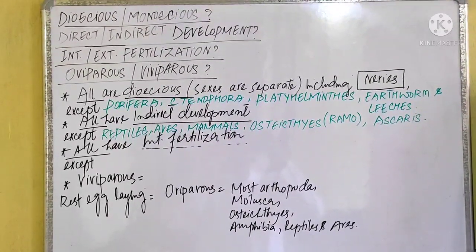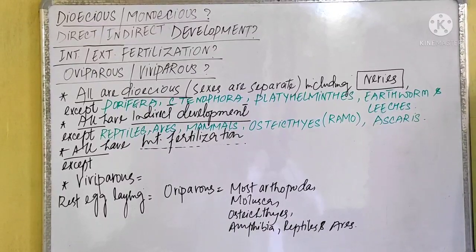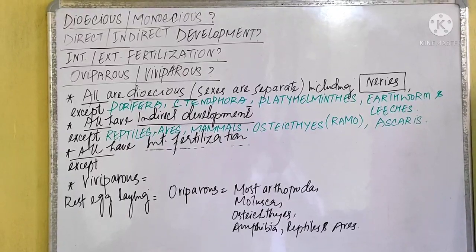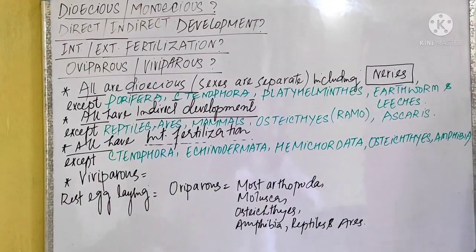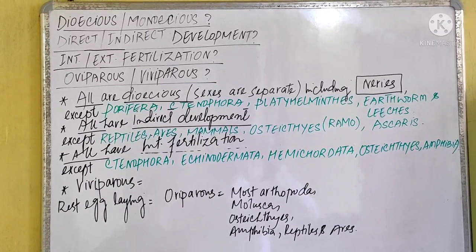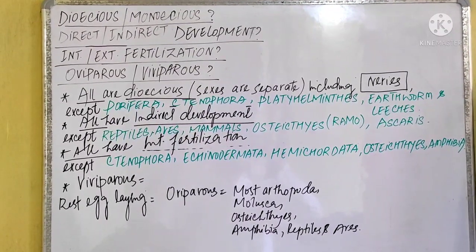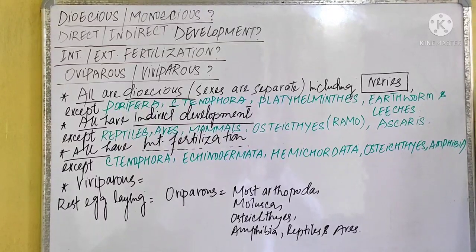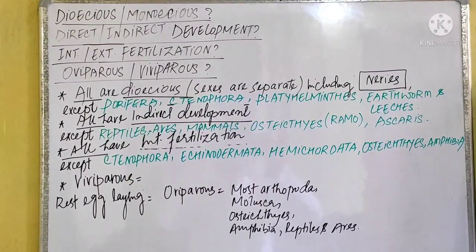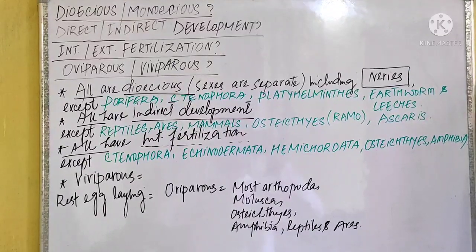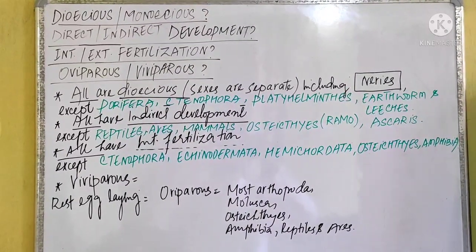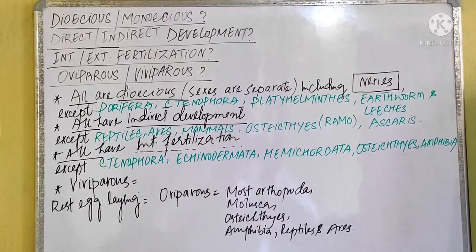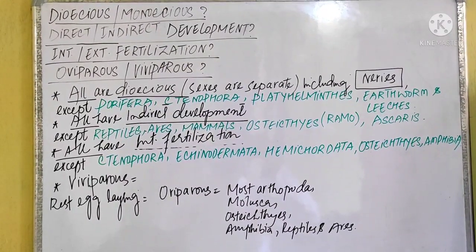Moving on — all organisms have internal fertilization, except the following: Ctenophora, Echinodermata, Hemichordata, Osteichthyes, and Amphibia — all of these have external fertilization. The rest of the animals have internal fertilization. So it is easy to remember: only Ctenophora, Echinodermata, Hemichordata, Osteichthyes, and Amphibia have external fertilization.